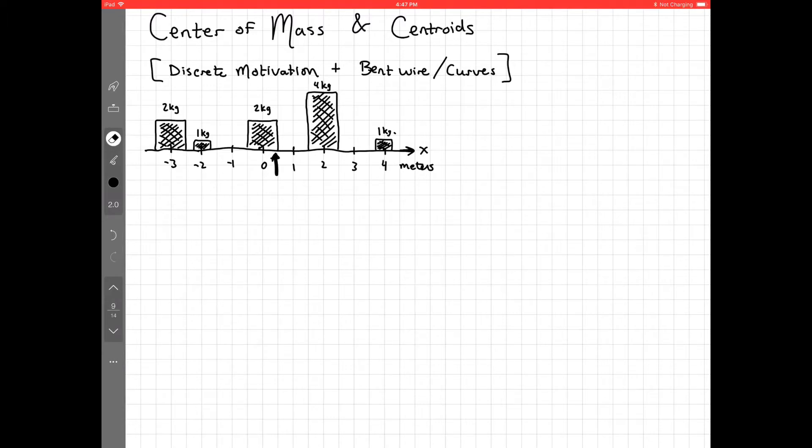As a motivating example, let's suppose we have a bunch of boxes set out on a board, and we want to figure out where the balancing point is. We have a 2 kg box set at location negative 3, 1 kg at negative 2, 2 kg at 0, 4 kg at 2, and 1 kg at 4. First, let's calculate the total mass. We just add up all of the masses: 2 plus 1 plus 2 plus 4 plus 1, and it looks like we have a total mass of 10 kg.